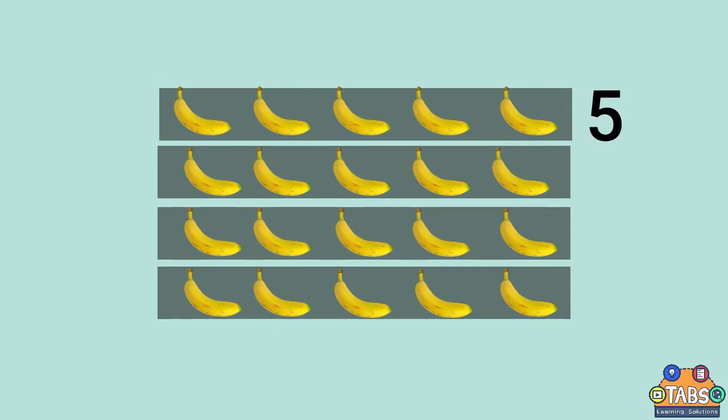There are 5 bananas in 1 fourth. Therefore, there are 15 bananas in 3 fourths of this set. 3 fourths of 20 is 15.